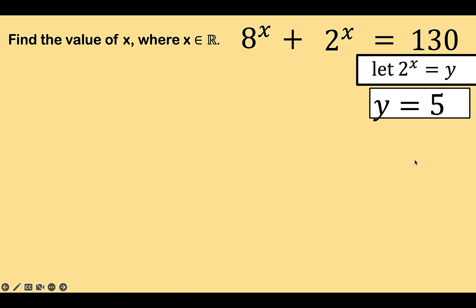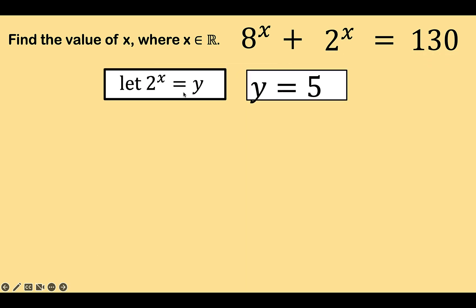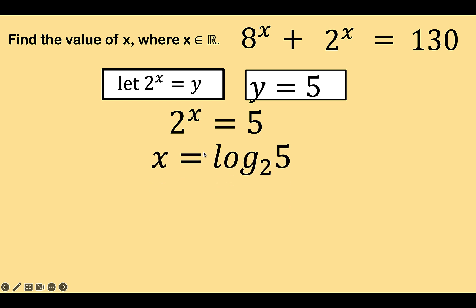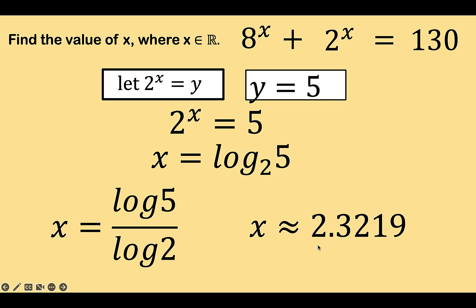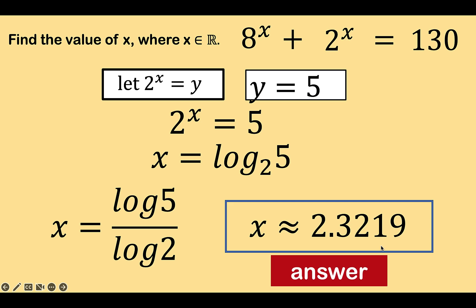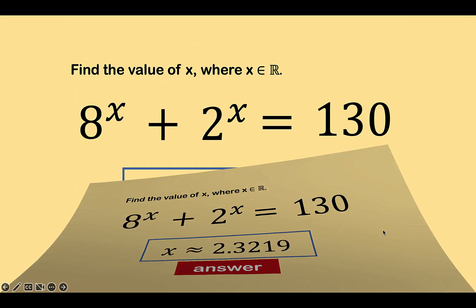We are now left with these two values. We have 2 raised to x equals y and y is equal to 5. By transitive property, we now have 2 raised to x is equal to 5. We are solving for the exponents so we can use logarithm. So x is equal to the logarithm of 5 to the base 2. By using the change of base property of logarithm, we now have x equals the common logarithm of 5 over the common logarithm of 2, which is approximately equal to 2.3219. This is now the value of x in this equation, and so this problem is now solved.